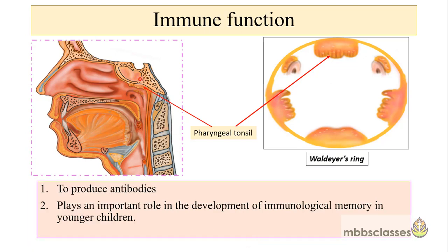The adenoid is present at birth. It shows physiological enlargement up to the age of 6 years and after that it atrophies. The function of the adenoid and specifically these lymphoid tissues is related to immunity — they produce antibodies and play an important role in the development of immunological memory in younger children.